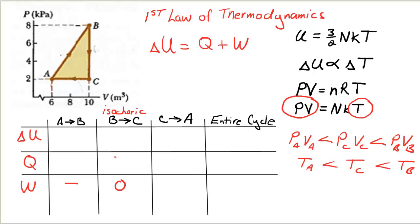And then from C to A, the gas is being squeezed. So we say that we're doing work on the gas, so work would be positive. And it would be the area under the line represented by CA.